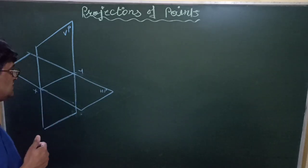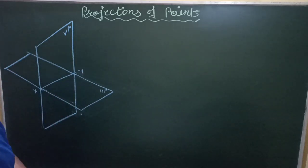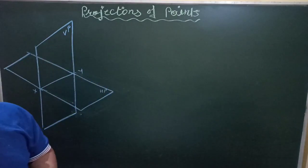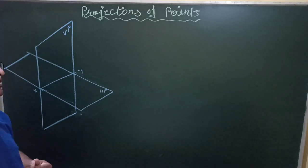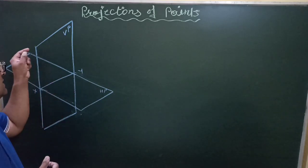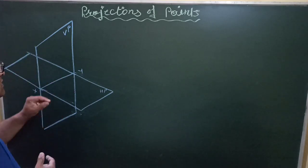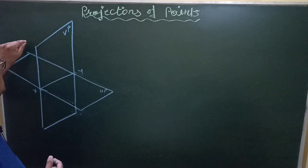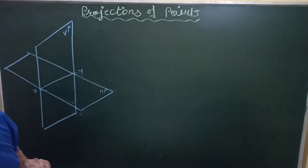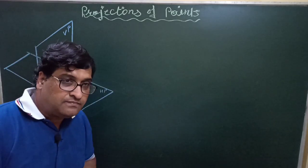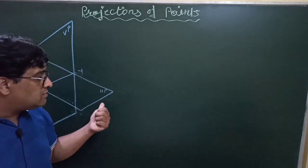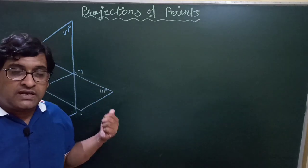As far as projection of points are concerned, we have to consider the position of the point in the space system or in the reference plane system — whether it is in the first quadrant, second quadrant, third quadrant, or fourth quadrant — and accordingly we are going to draw the projections.